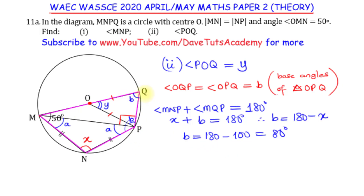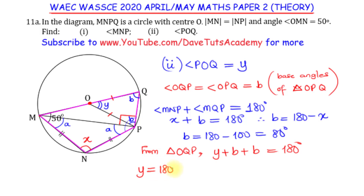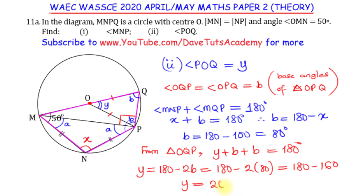B is 80 degrees. But from triangle OQP, we can sum the angles to say Y plus B plus B equals 180 degrees — Y, B, and B are the angles in that triangle, and the sum of angles of a triangle is 180 degrees. So Y will be 180 minus 2 times 80, which is 180 minus 160. So Y, which is angle POQ, is nothing but 20 degrees.